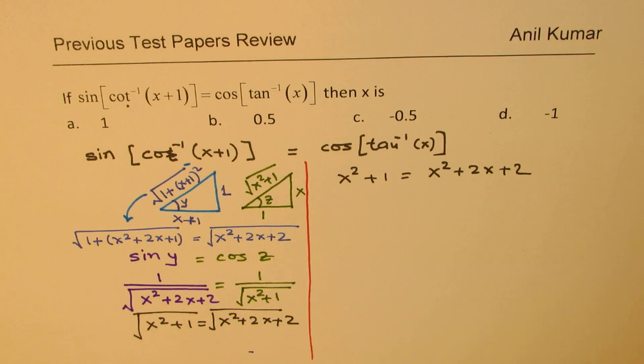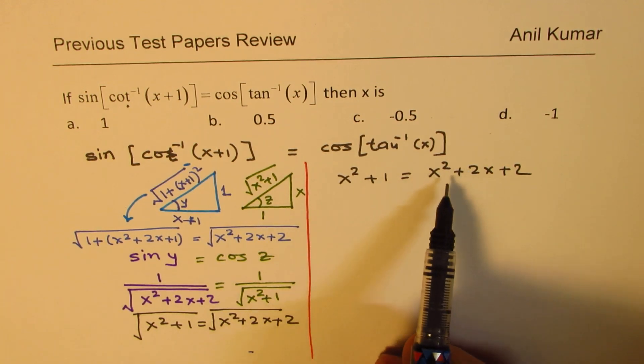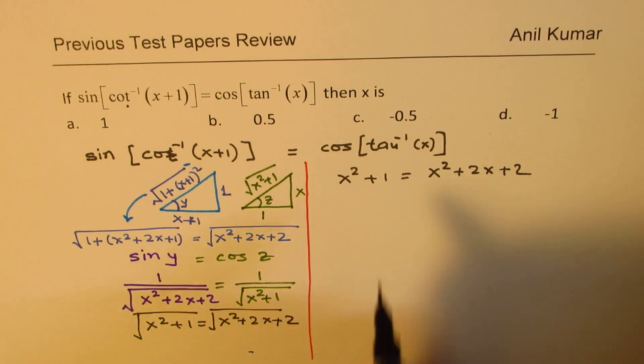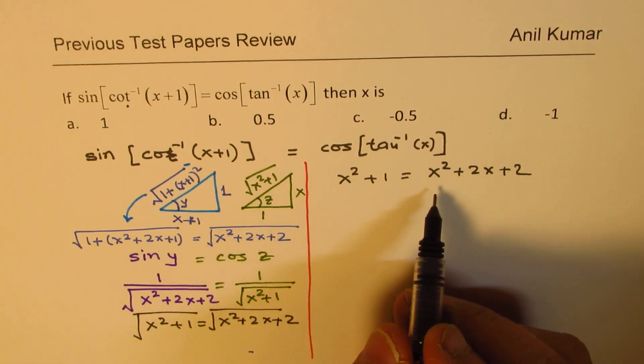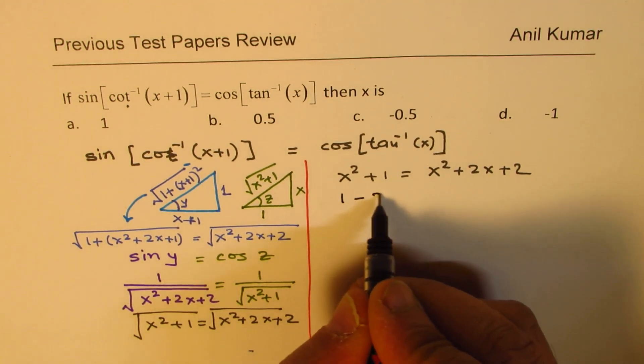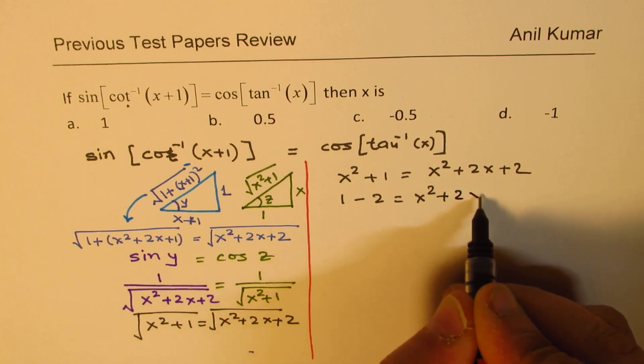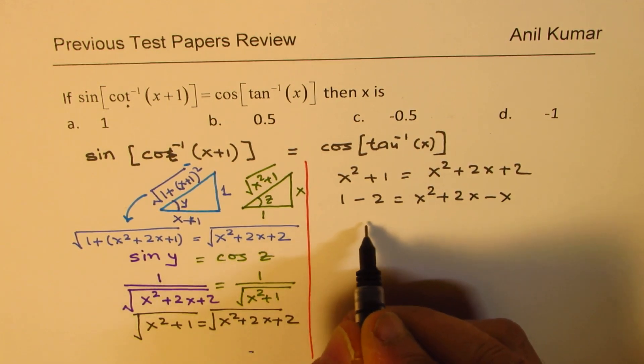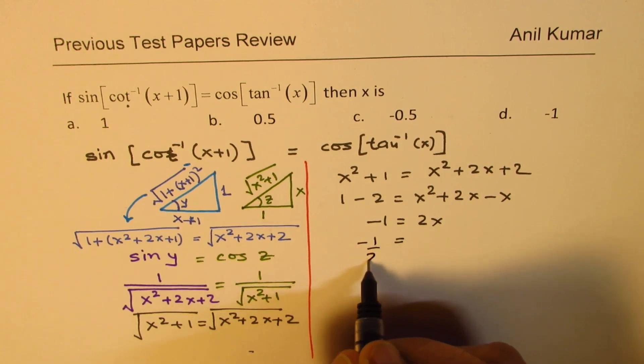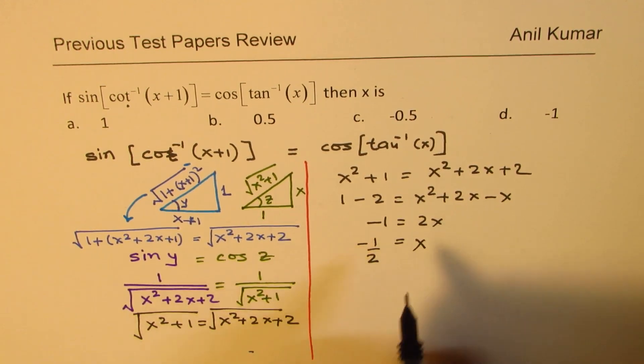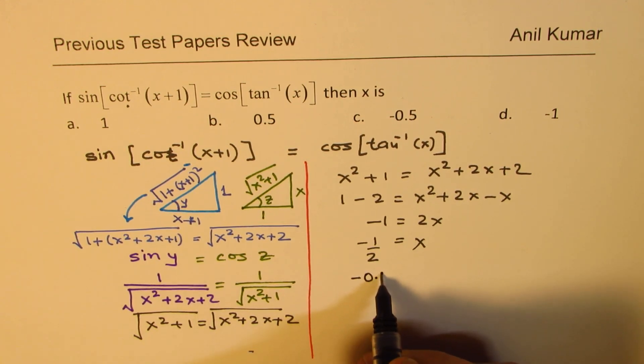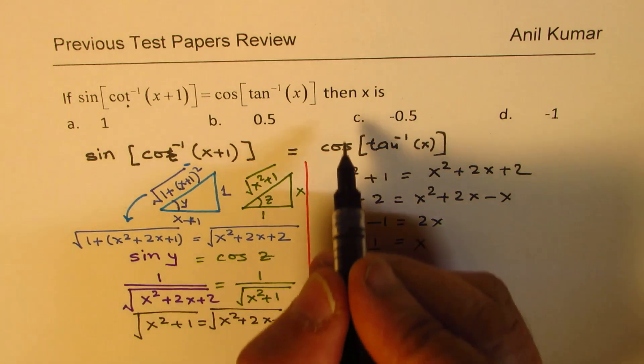Now bring all the variable terms on one side and the constants on the other side. So we get 1 minus 2 equals 2x. So that is minus 1 equals 2x, and minus 1 over 2 equals x. So we get the value of x as minus half, which is minus 0.5, which is option c.